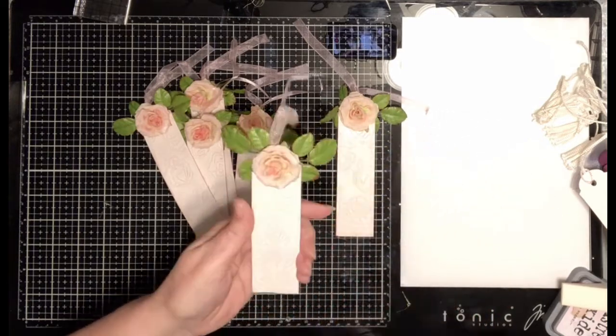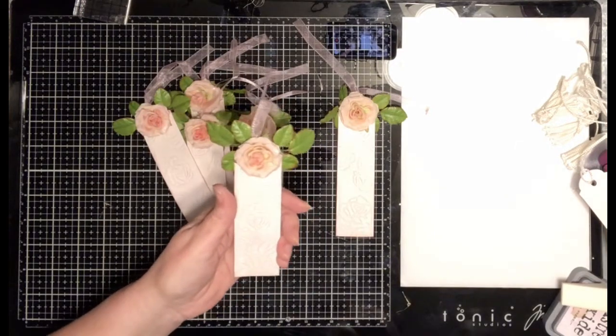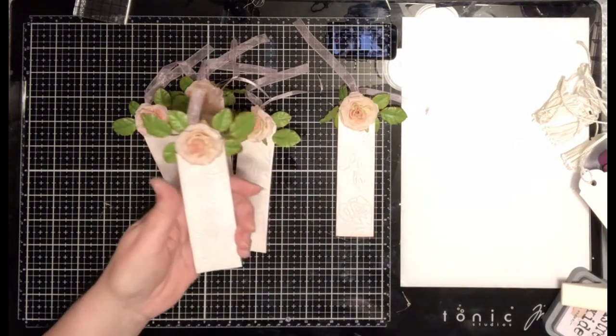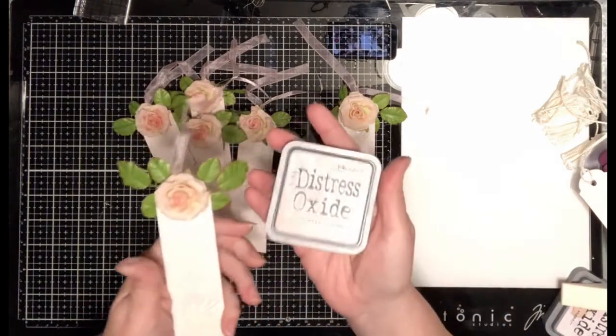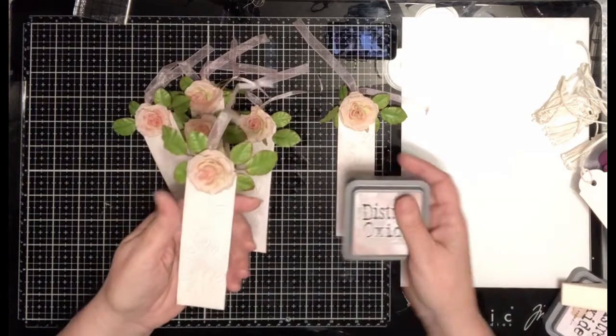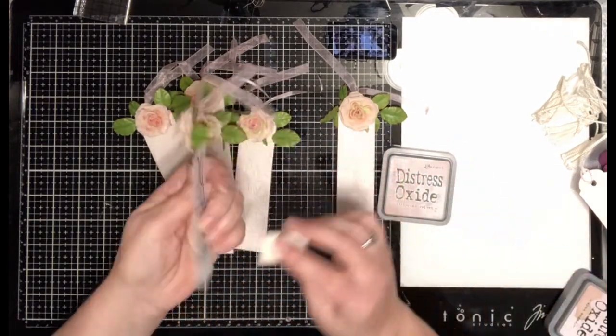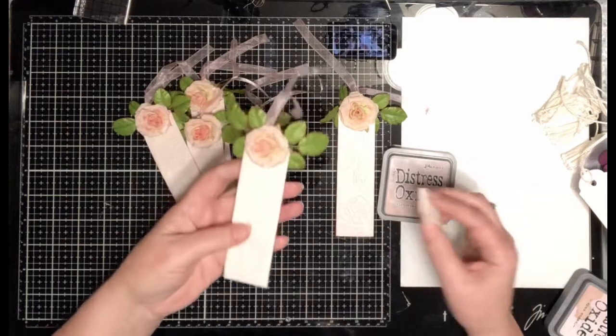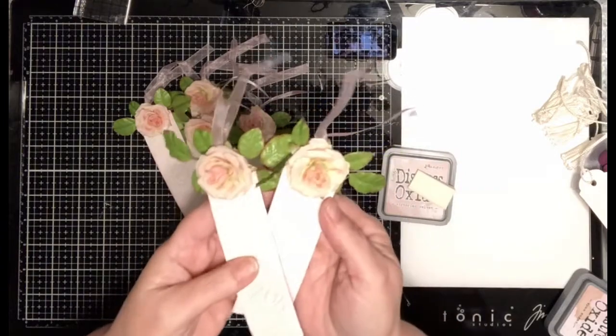I used some of my distressed oxide inks on this. I used the Victorian Velvet on this and I just took it and went around the edges with it on both sides. Then with a very light hand, I went over the top of my embossed flowers on there.